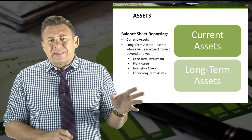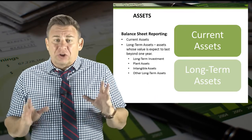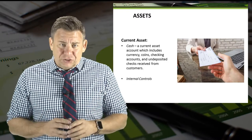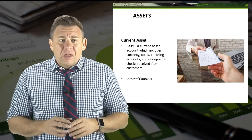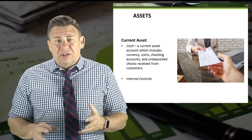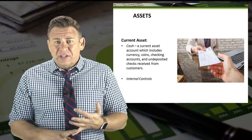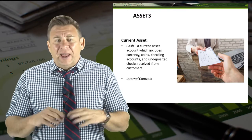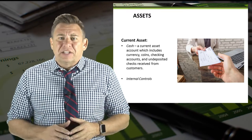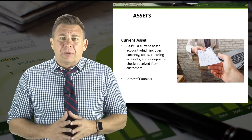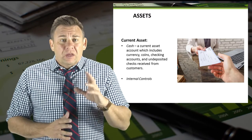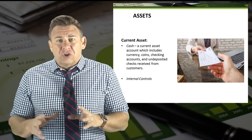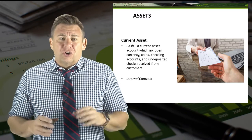Let's look at the four assets we're going to cover in this module. Our first asset is cash. The cash account includes currency, coins, checking accounts, and undeposited checks received from our customers. Additionally, we will learn about internal controls over cash.